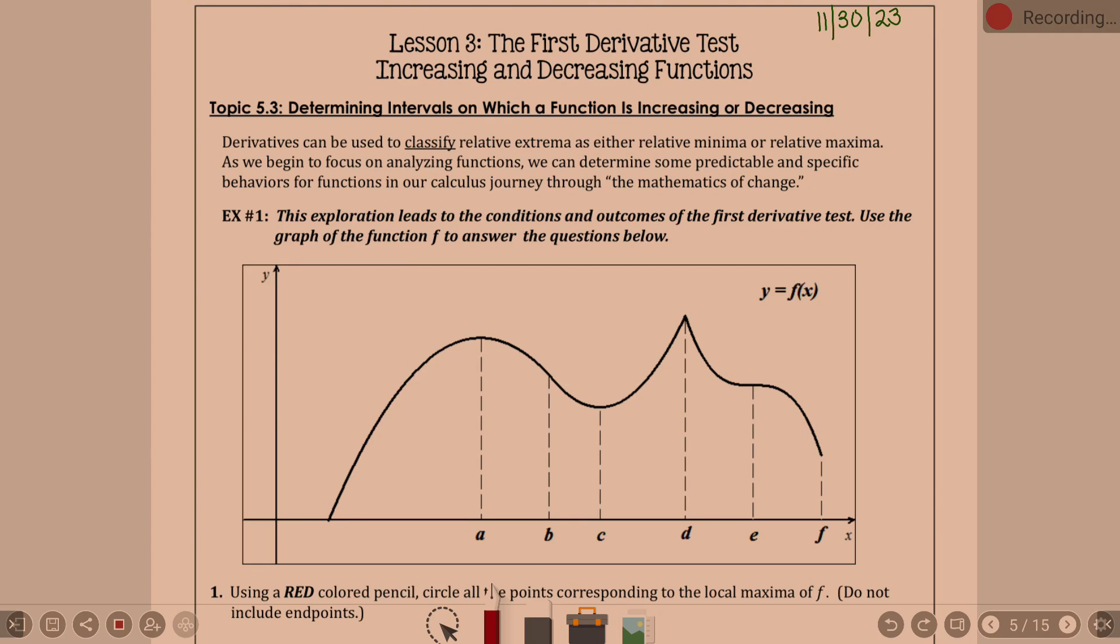Let's reread the direction: circle all the points corresponding to local maxima. Is it a maxima? Yeah, it is a maximum point. So we are talking about a and d. C, as you realize, is a minimum. We're not talking about endpoints.